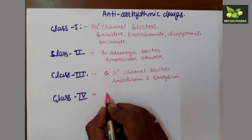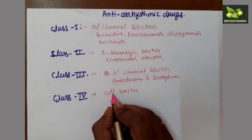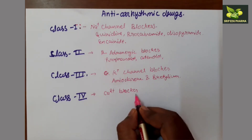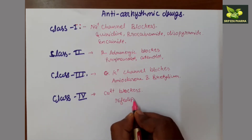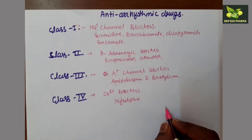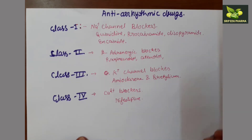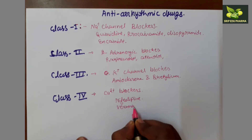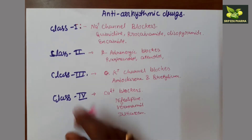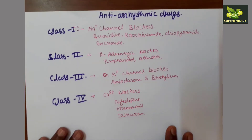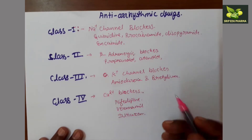The fourth category is the calcium channel blockers. We have a detailed classification for calcium channel blockers, but here we'll focus briefly on the chemistry. Calcium channel blockers include nifedipine, which is a dihydropyridine derivative, as well as amlodipine, felodipine, verapamil, and diltiazem. These are drugs belonging to the four different classes of antiarrhythmic drugs — sodium channel blocker, beta-adrenergic blocker, potassium channel blocker, and calcium channel blocker.